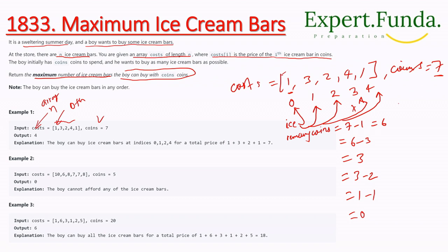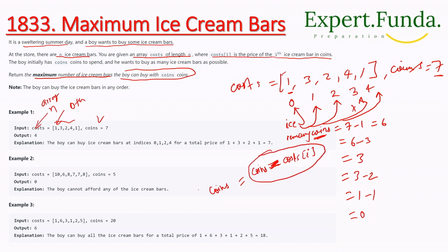So each time you have to decrement your coins with the cost of the current ice cream: coins = coins - costs[i]. You have to update your coins each time after buying an ice cream.